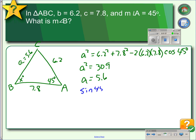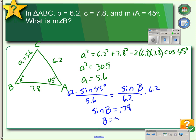The sine of 45 degrees over its opposite side 5.6 equals the sine of angle B over its opposite side 6.2. Multiplying both sides by 6.2 gives us sine of B equals 0.78. The inverse sine gives us B equals 51.5 degrees.